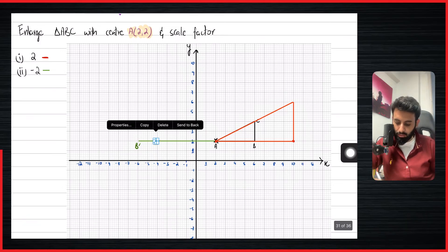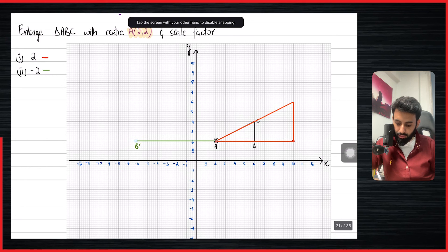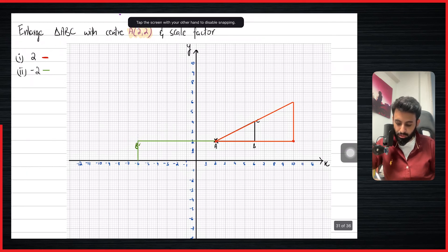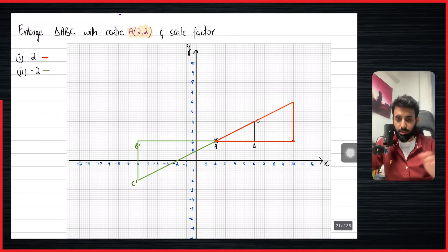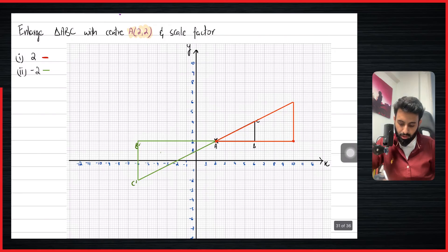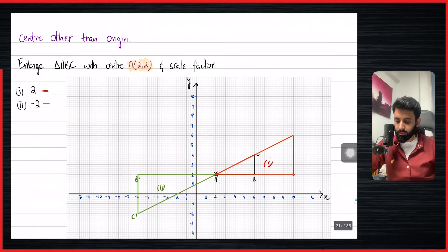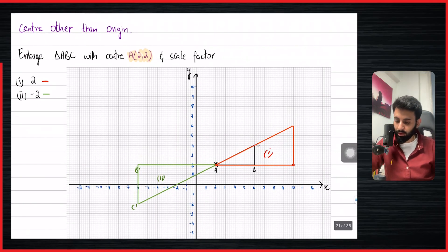For point C from the center it's four units to the right and two units up, so the image is going to be eight units and four units, but not to the right — it's going to be towards the left — and not four units up, but four units down. The height is four units in the opposite direction: one, two, three, four. Join the points and we have the image for scale factor minus two.